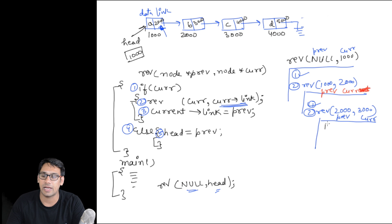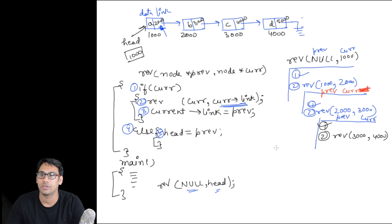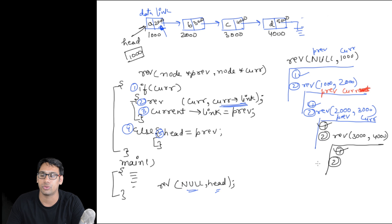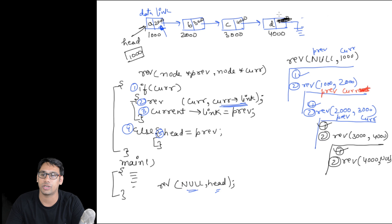Again line 1 is true, so in line 2 we are going to call rev(3000, 4000). When we call rev(3000, 4000), line 1 is also true, so we execute line 2. In line 2 it is going to call rev(4000, null), because this is the last node and it is storing null in its link part.